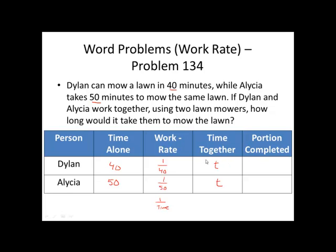The portion of the job completed is found by multiplying the work rate by the time they're working. 1 40th times t is t over 40. 1 50th times t is t over 50 for Alicia. And the portion done by Dylan plus the portion done by Alicia should be 100% of the lawn or simply the number 1. So our equation will be t over 40 plus t over 50 equals 1.